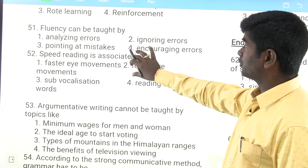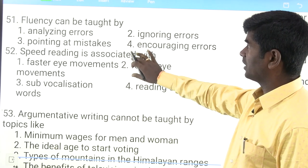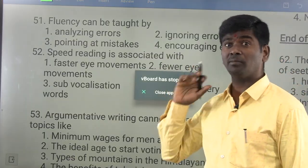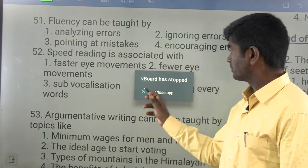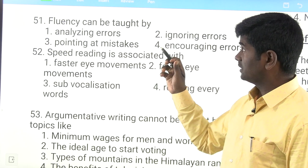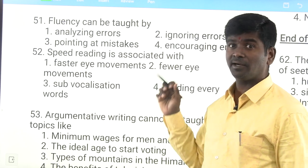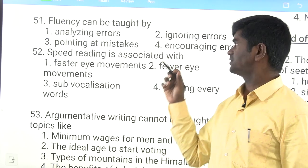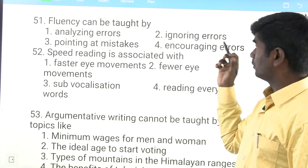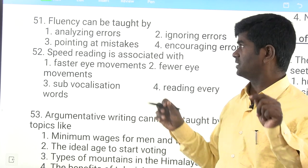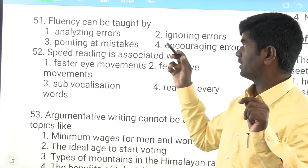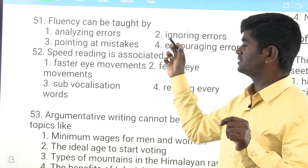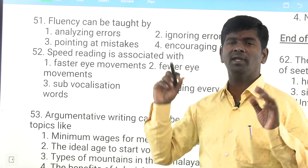Fluency can be taught by: analyzing errors, ignoring errors, pointing at mistakes, or encouraging errors. The answer is ignoring errors — you should not analyze errors for fluency. Nobody is able to acquire a language perfectly, so the answer is ignoring errors.